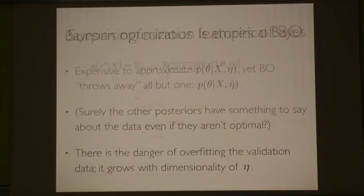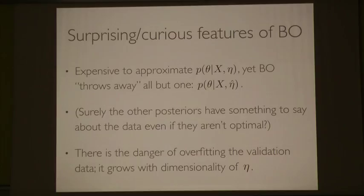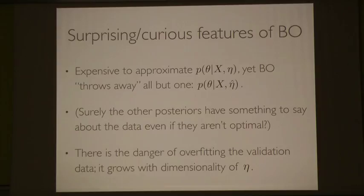Here are some surprising features of BO. The assumption of the method is that it's expensive to approximate posteriors, but BO throws away all but one of them — it keeps the best one. If you evaluate a hundred posteriors under different etas, you throw away 99 and keep the best one. Surely the other posteriors have something to say about the data, even though they are not optimal. There's also a danger of overfitting the validation data, which grows with the dimensionality of eta.